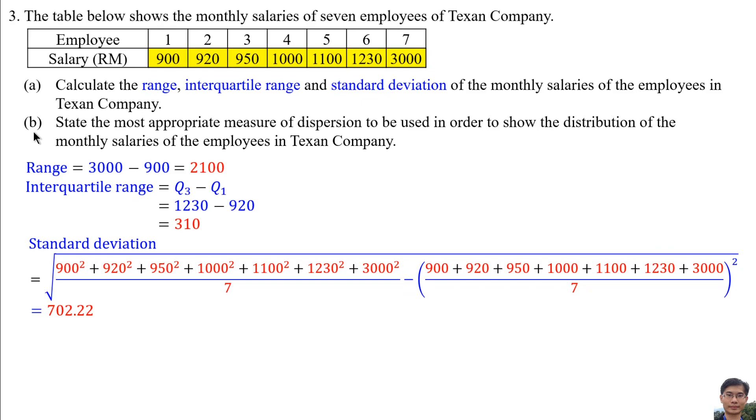B. State the most appropriate measure of dispersion to be used in order to show the distribution of the monthly salaries of the employees in Texan Company. So the most appropriate measure of dispersion is the interquartile range, because there is an outlier, 3000.